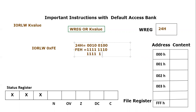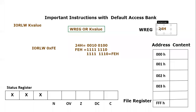Performing the OR operation bit by bit: 0 OR 1 = 1, 0 OR 1 = 1, 1 OR 1 = 1, and the last bit is 0. So the result would be 0xFE. The new result stored in the working register is 0xFE. The working register value changes from 0x24 to 0xFE.